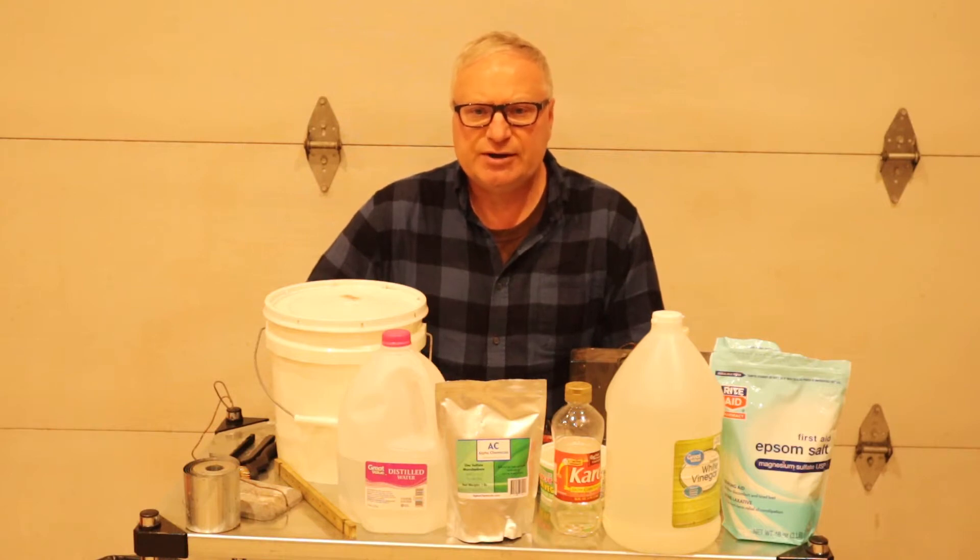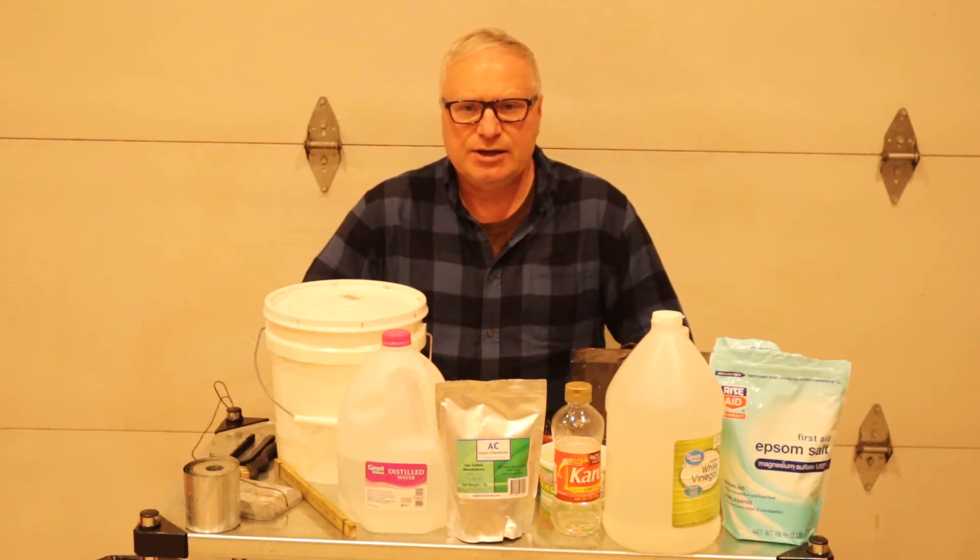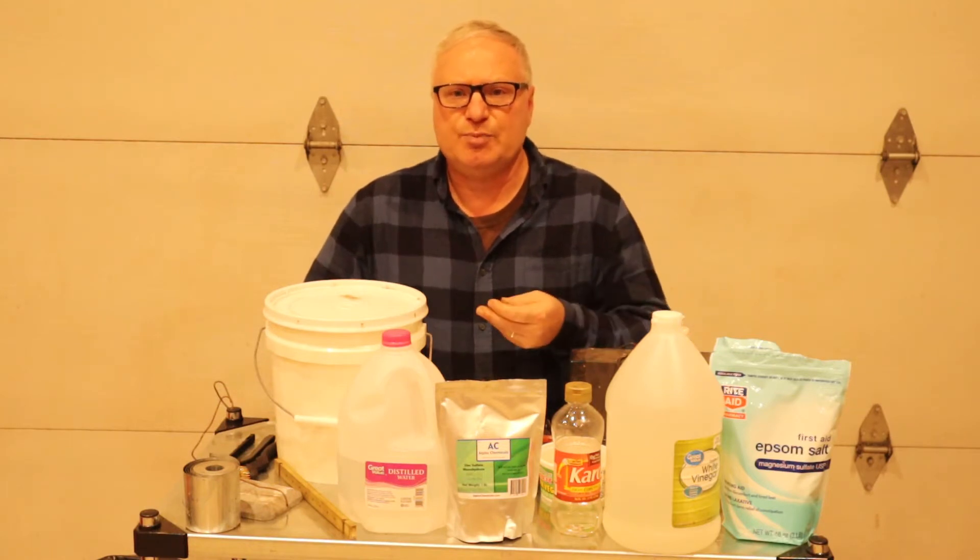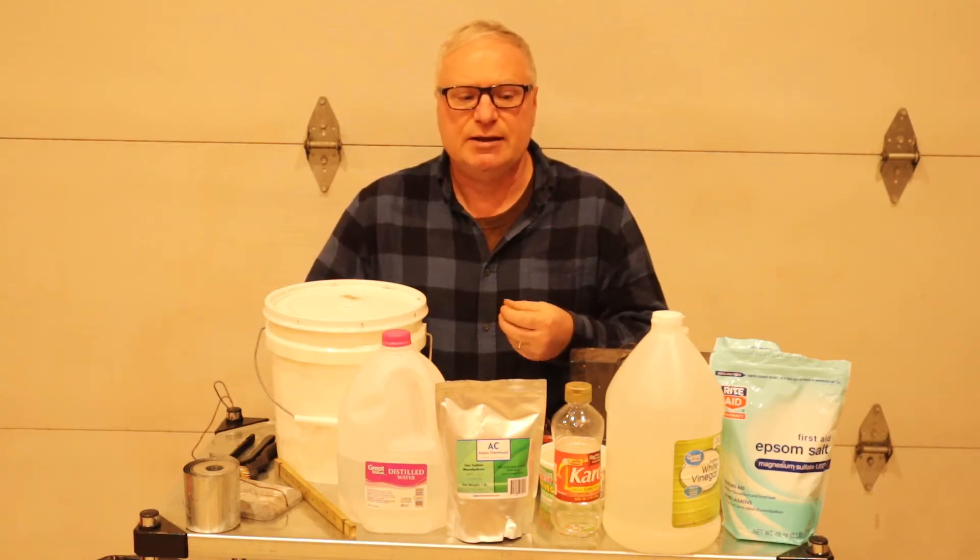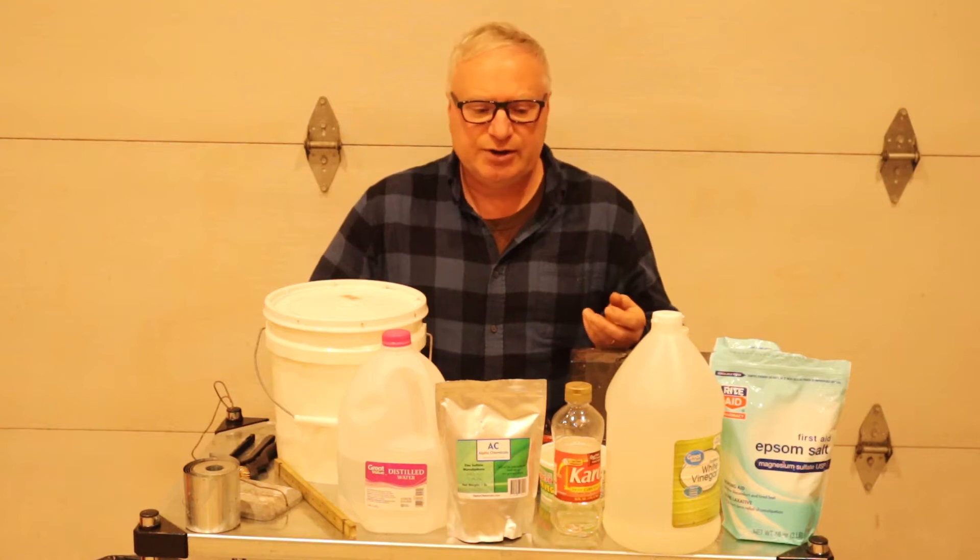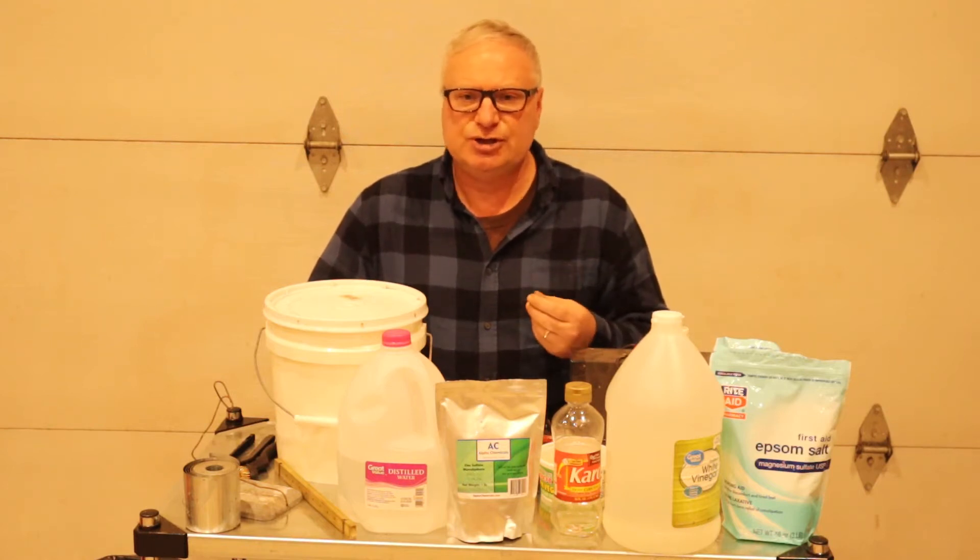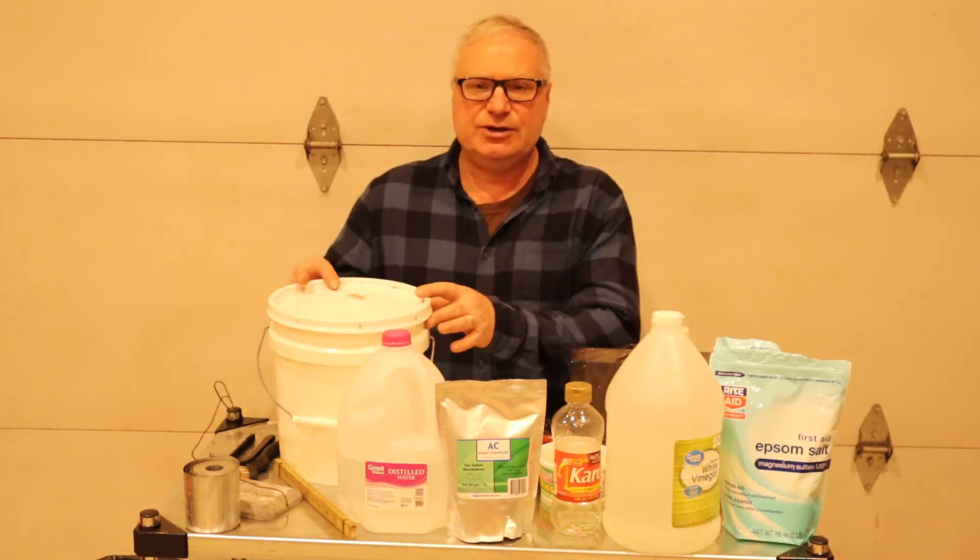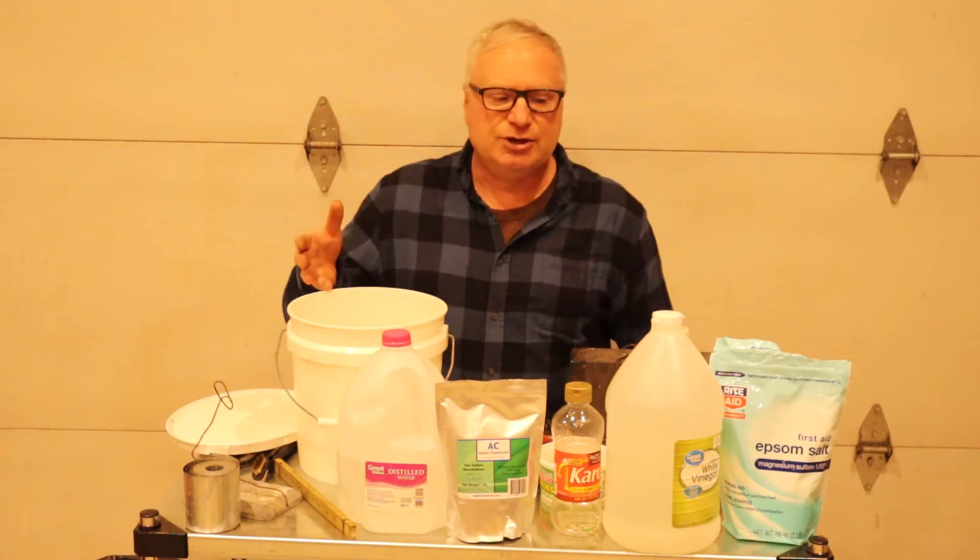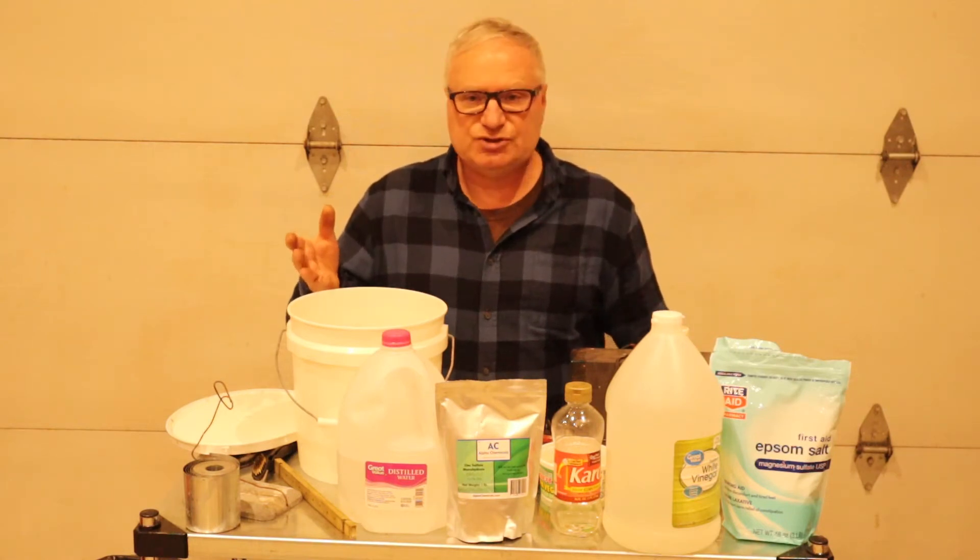The first part of this video is going to cover zinc plating. To zinc plate, you need to have a salt that will actually transfer the zinc from a zinc bar to the product you're trying to plate, and you need some sort of electrolyte solution using vinegar. You also want a brightener solution using Caro syrup. We have here a standard two gallon pail which works pretty well from a size point of view to plate fasteners.